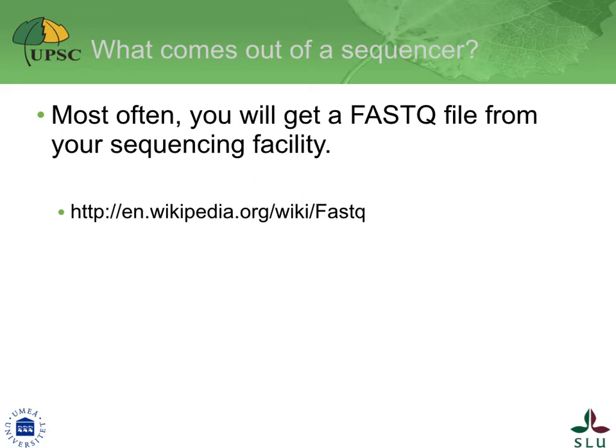Let's start at the beginning with a question: what actually comes out of a sequencer? Commonly, a compressed text file in the FastQ format. Take the time to look up the Wikipedia page on the FastQ format for more details. Briefly, it stands for Fast with Quality. A FastQ text file contains the base pair sequence of every fragment that was sequenced by the machine.